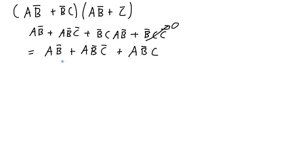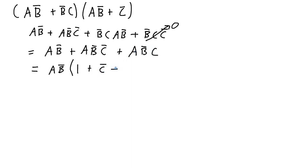Now I want to look for some common factors, so I can factor out that common factor from the different terms. It can be a single variable or multiple variable common factor — the more variables in common, the better. In this case, I actually have a·NOT b in all three of these terms. So I can factor out that a·NOT b term from each part of the expression. I'm left with just one, then NOT c, then c. Anything ORed with one will simply be one, so this expression is simply equal to a·NOT b.